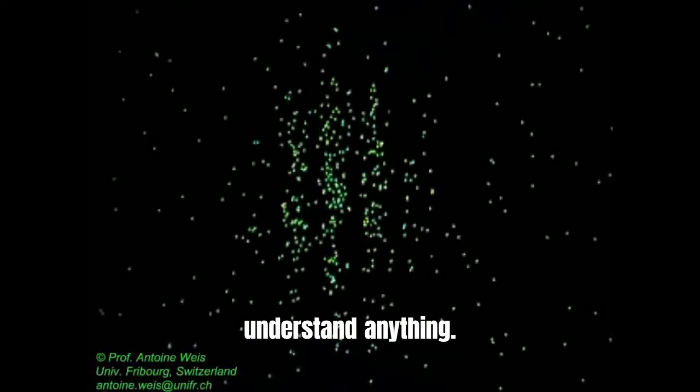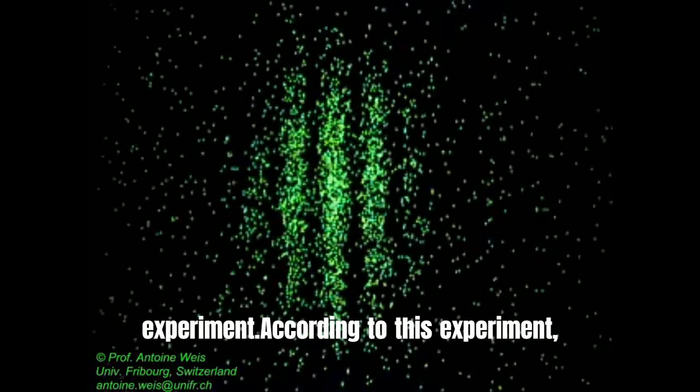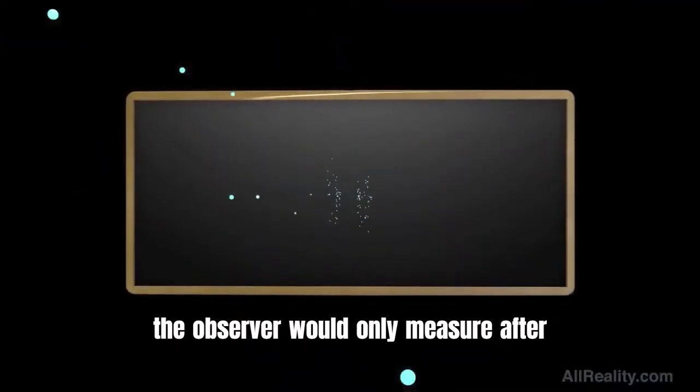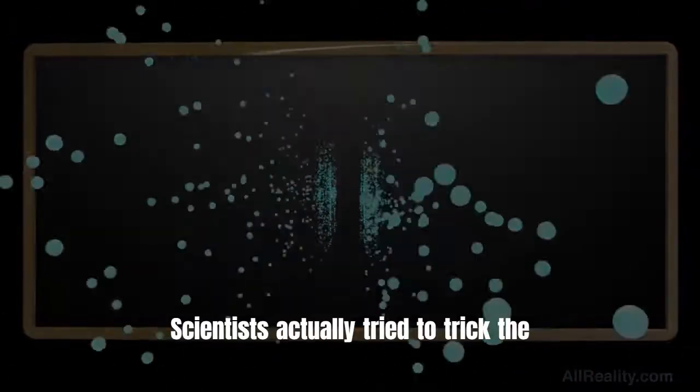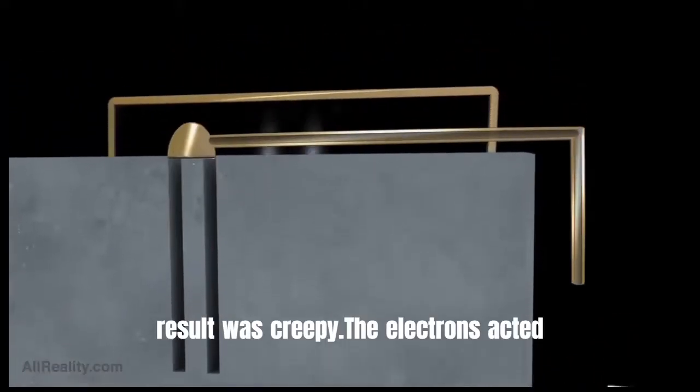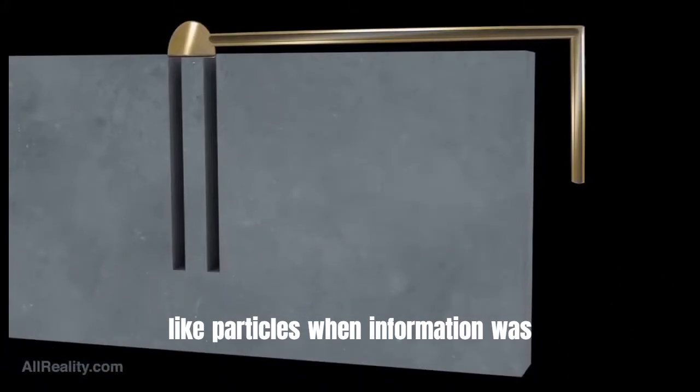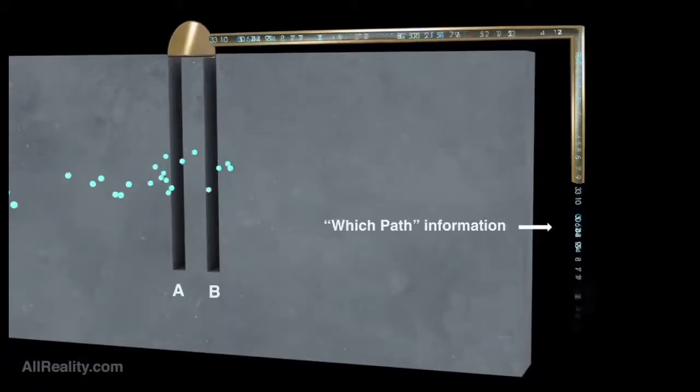Scientists were scared and could not understand anything. Then they wanted to do another experiment called the electron delay experiment. According to this experiment, the observer would only measure after the electrons fell to the ground. Scientists actually tried to trick the electrons with this experiment, but the result was creepy. The electrons acted like particles when information was requested from the observer, as if they saw the future.